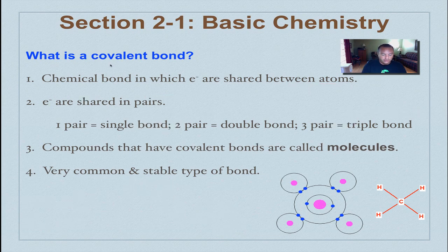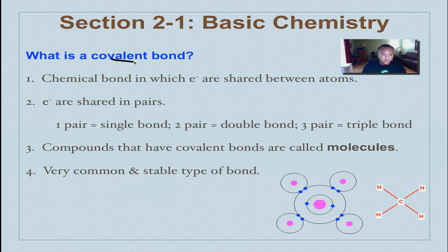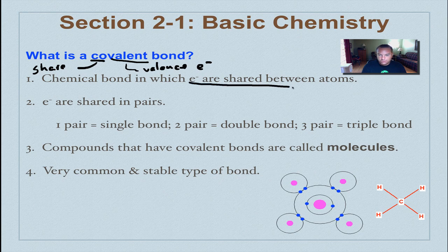All right, so what's a covalent bond? Well, if you look at the word itself, you have 'co' and you have 'valent.' Co simply means to share. Well, what are you sharing? Valence electrons. Right here: electrons are shared between atoms. Now the one thing you want to remember is that electrons are shared in a pair. So if you have one pair of electrons being shared, that's a single bond. If you have two pairs of electrons, those are double bonds, and then obviously three pair, that would be a triple bond.